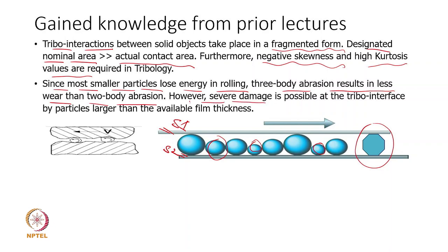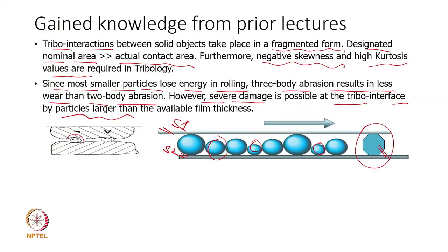Severe damage is possible at the tribological interface from larger particles. If the particle size is bigger and it is not able to rotate inside the interface, it will slide and act like two-body abrasion. A slightly rounded particle will go through rolling action, and rolling action does not create much wear — it may create some fatigue, but sliding wear will be much lesser.